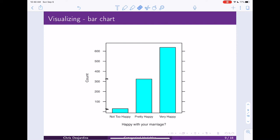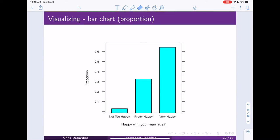Rather than visualizing the counts, we could visualize the proportions. And so that's what we're seeing here. Instead of having the counts on the y-axis, we'll have proportions. And so these are just the proportions that we calculated in that relative frequency table from before.